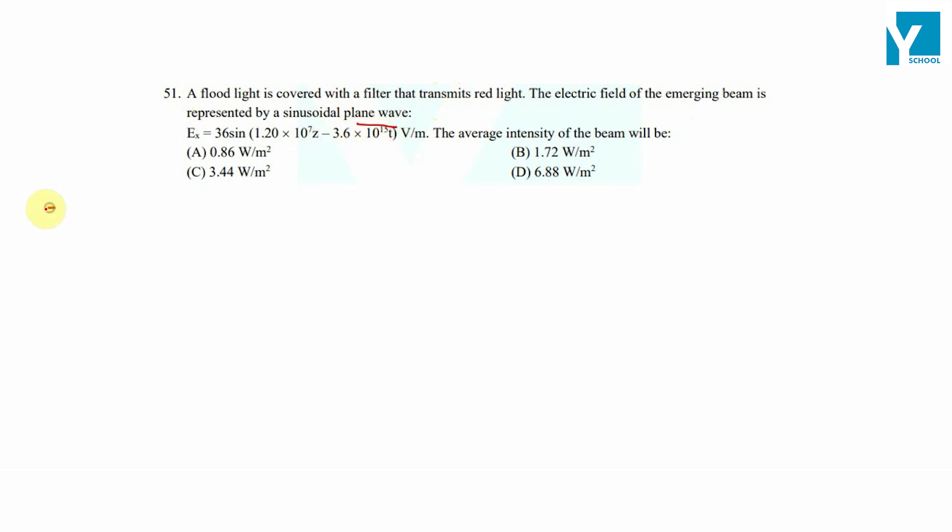The electromagnetic wave has the mathematical expression Ex = 36 sin(1.20 × 10^7 z - 3.6 × 10^15 t) volts per meter. Let us compare with the standard expression.